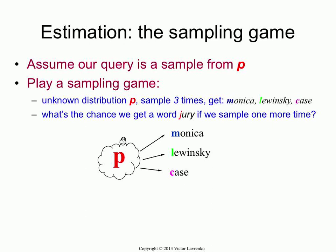Then the question is, if I do one more sample, what will be the probability of getting a particular word in the vocabulary? So if the word was, say, jury, how often would I expect to see jury as the next outcome of this sampling game?